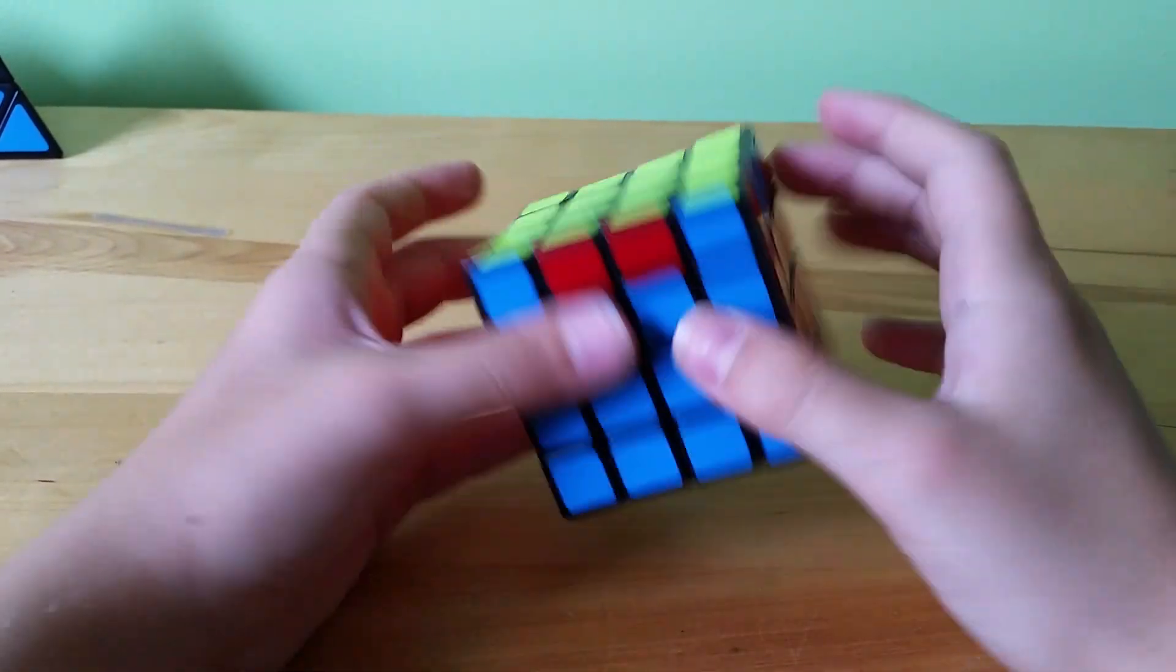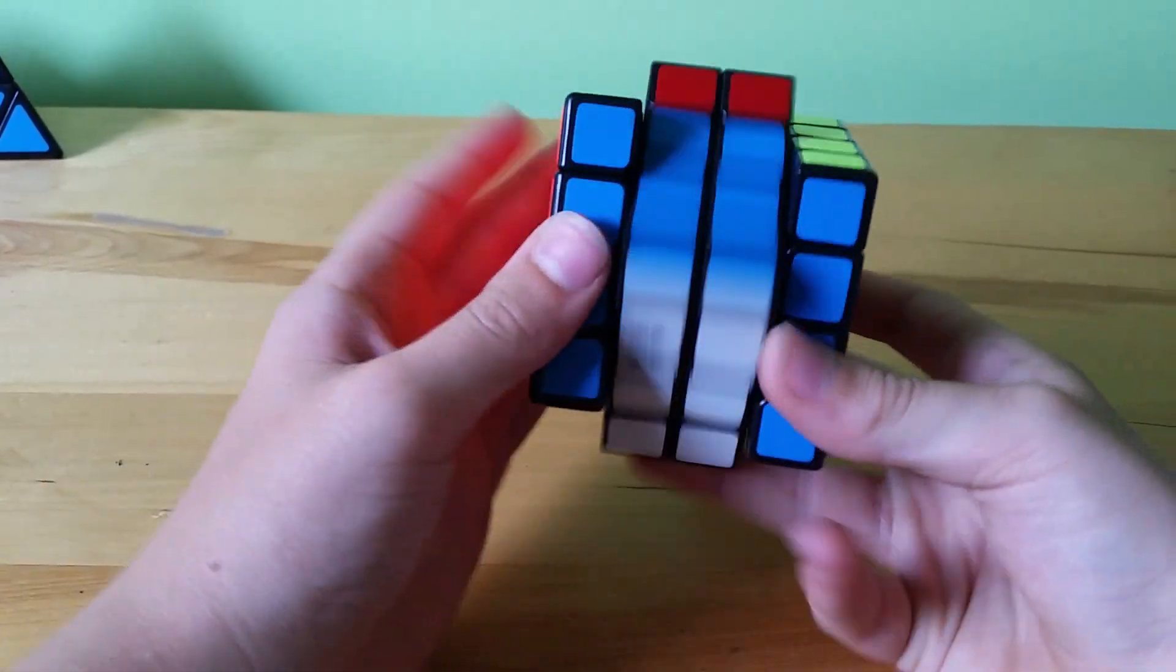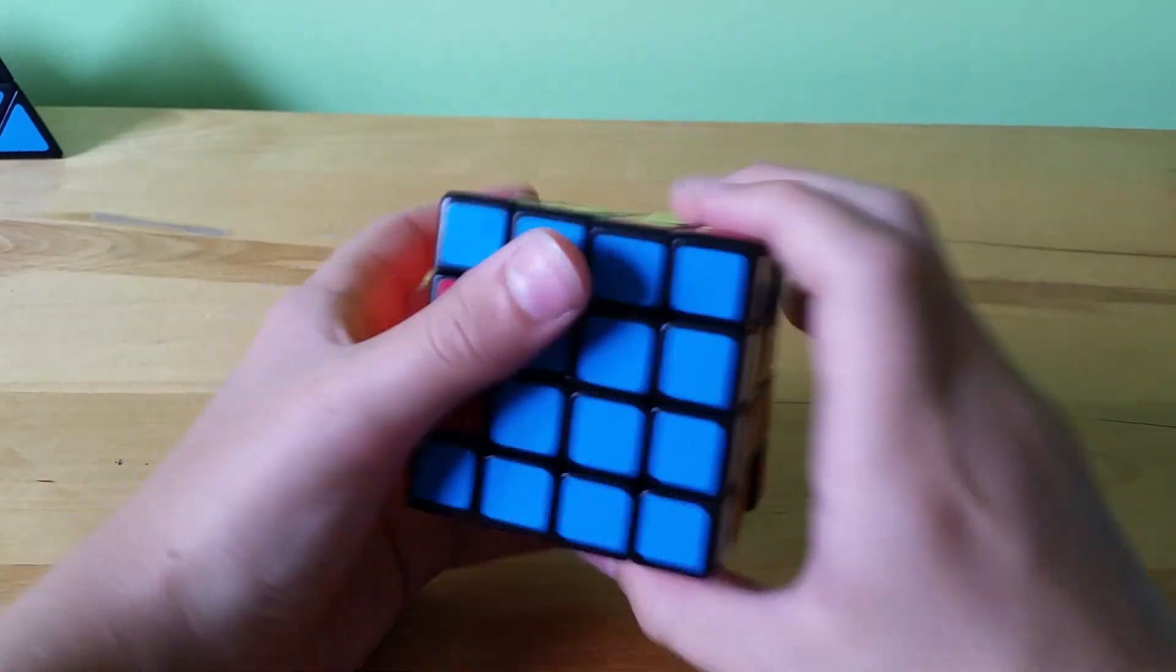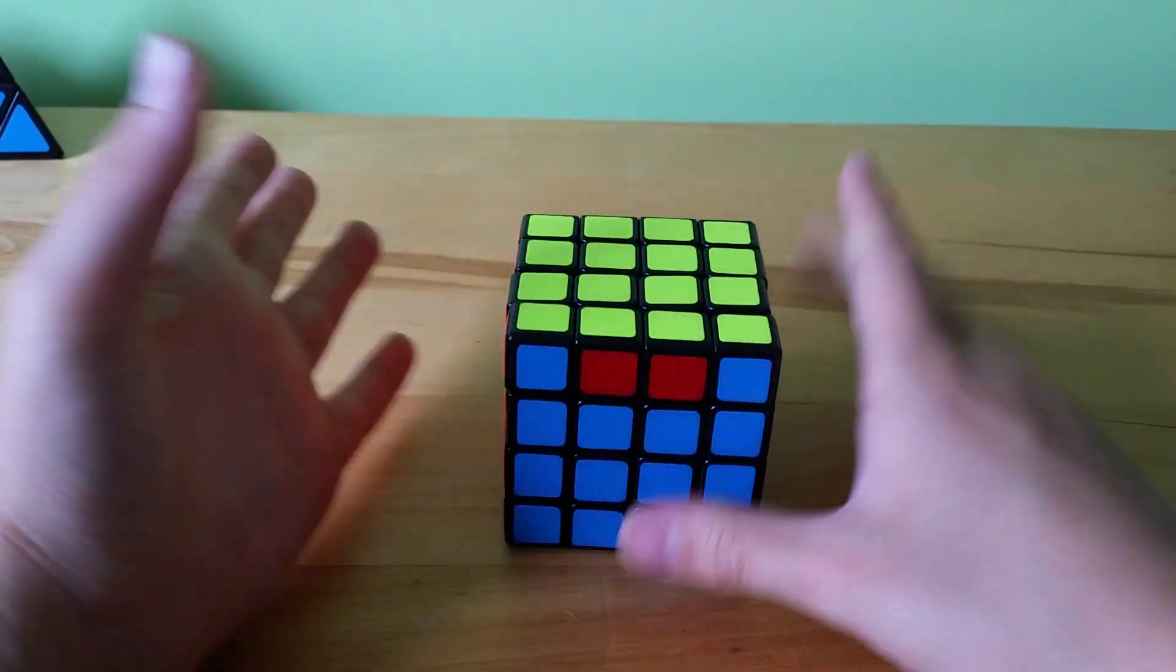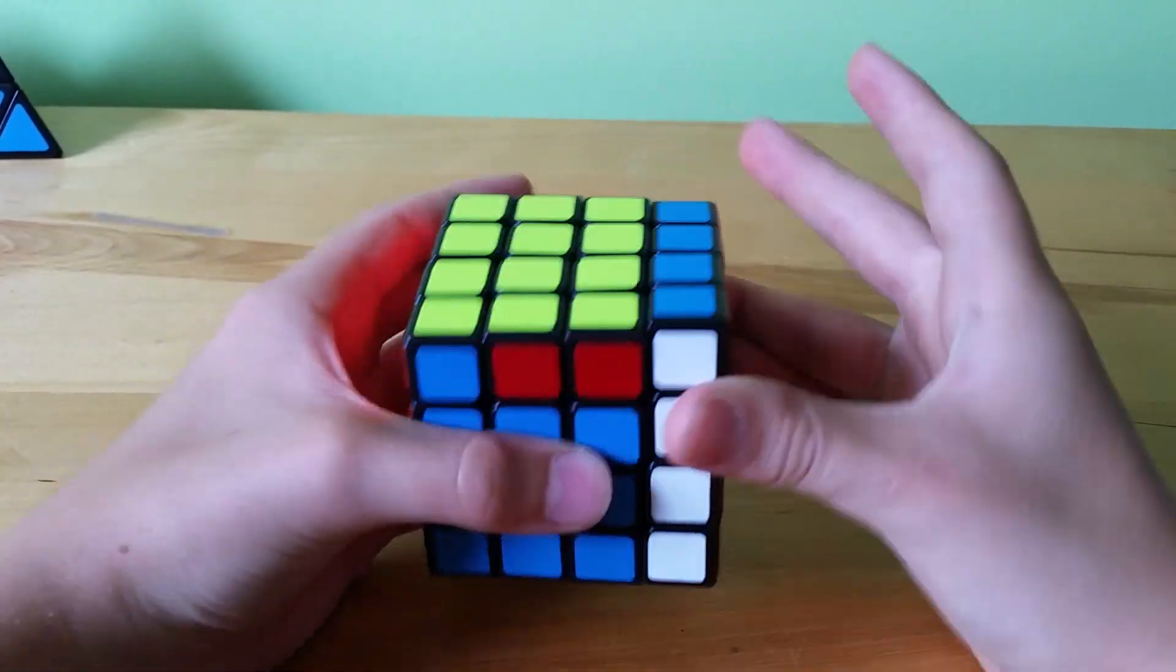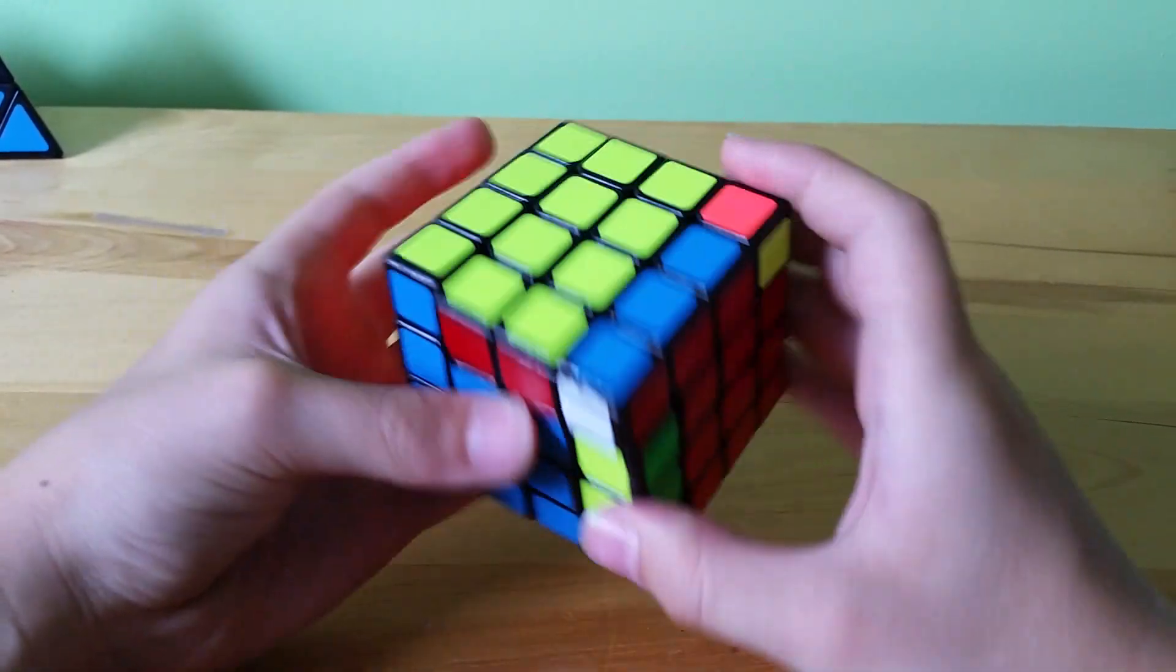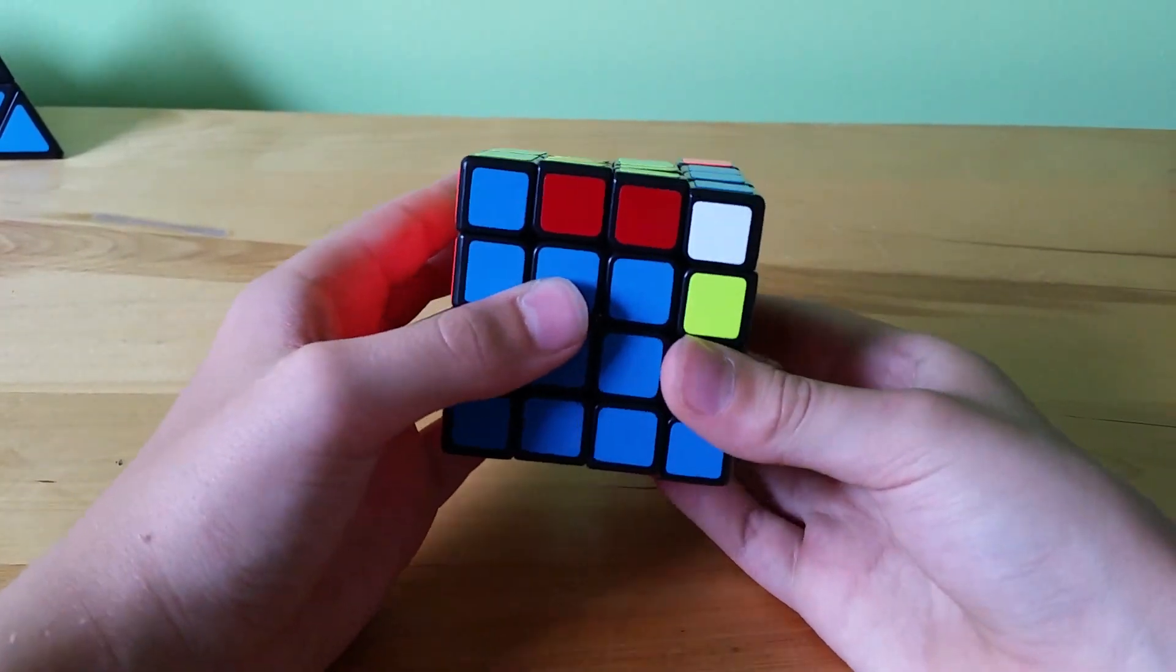Next case. Some people do cases that have like Bs and Fs and Ls and just not optimal moves. Though how I do it is I hold it like this and I just do R, U, R', U' to place the centers opposite. Then I do the algorithm I showed before.